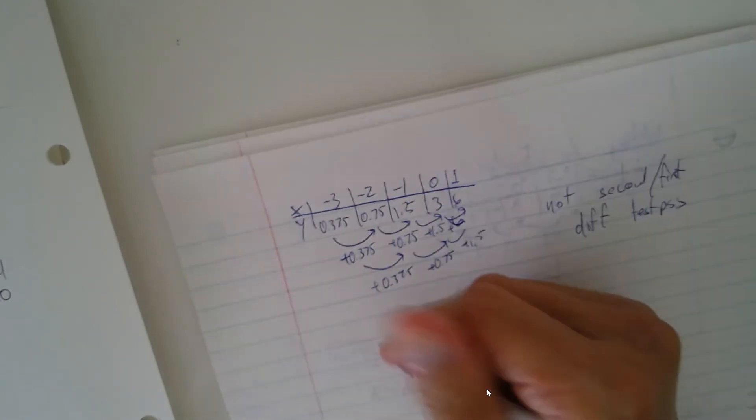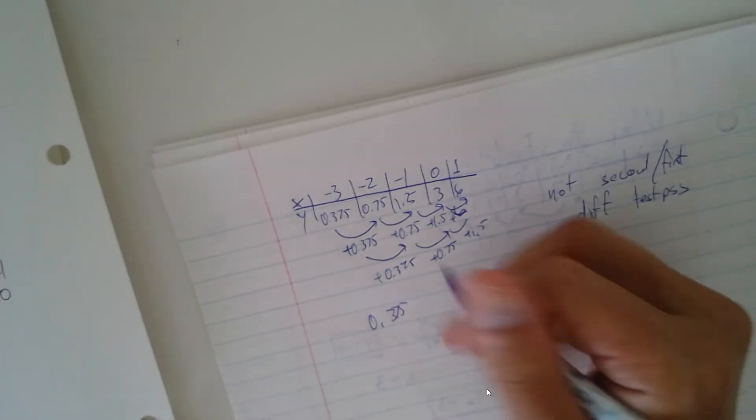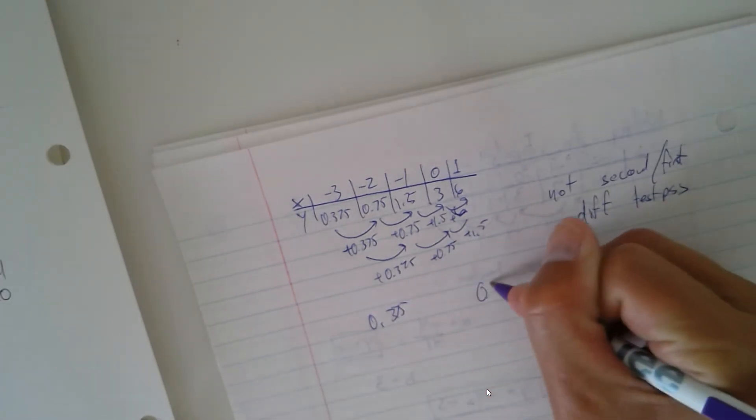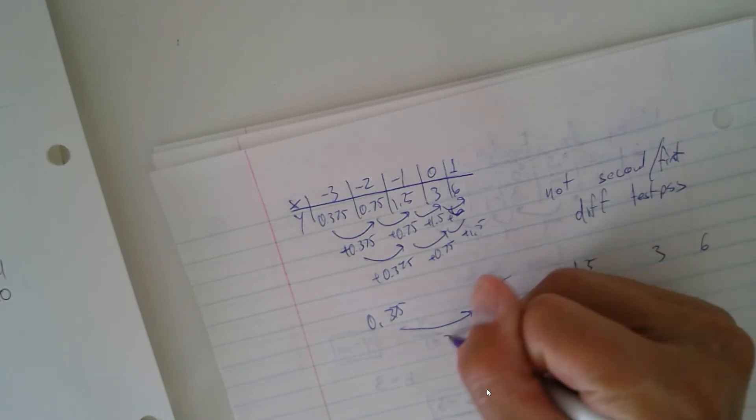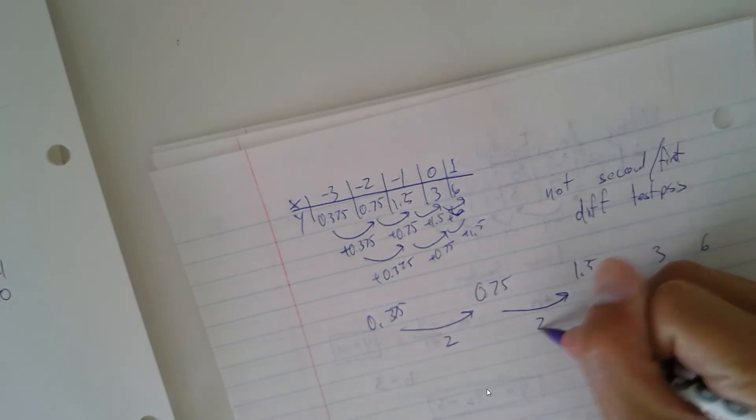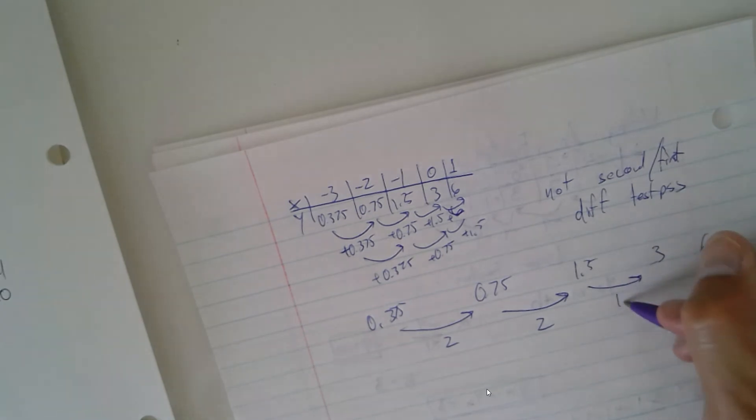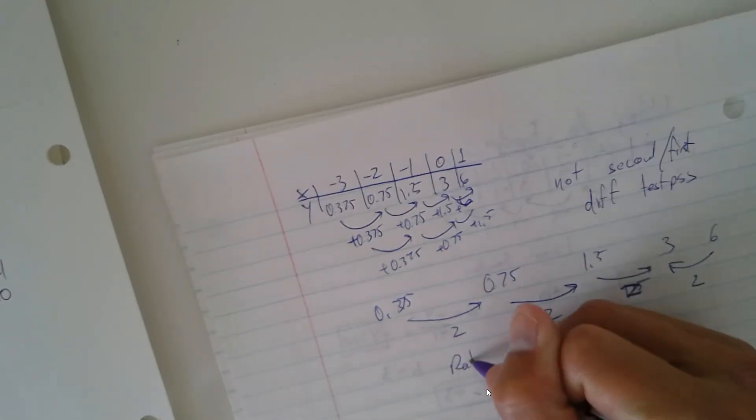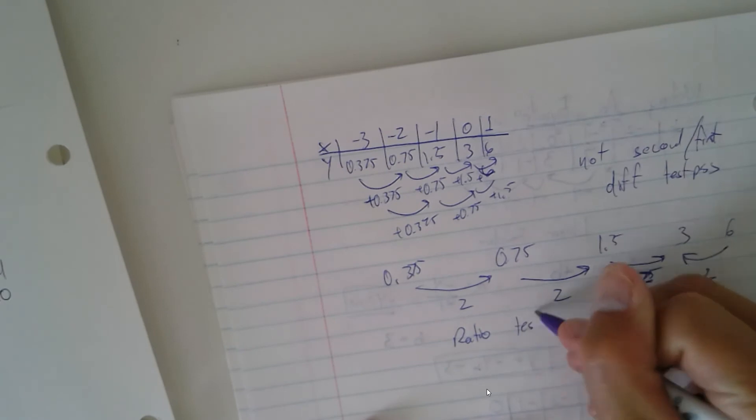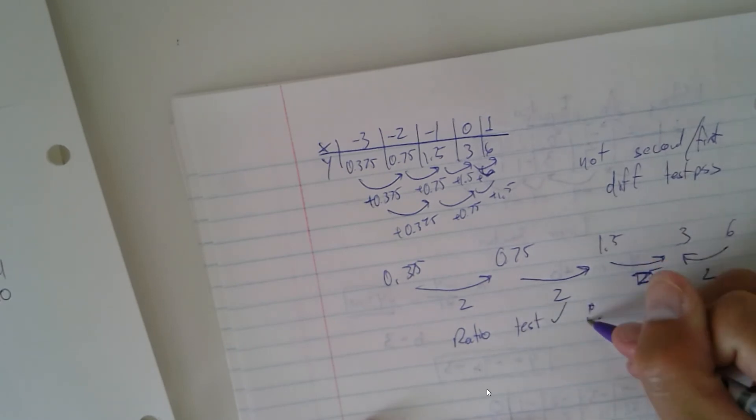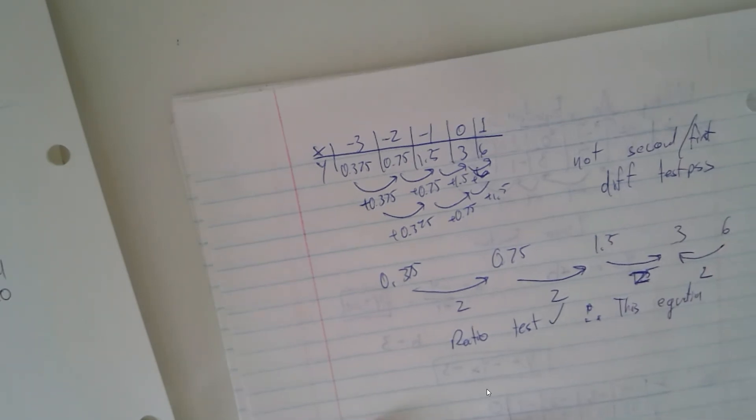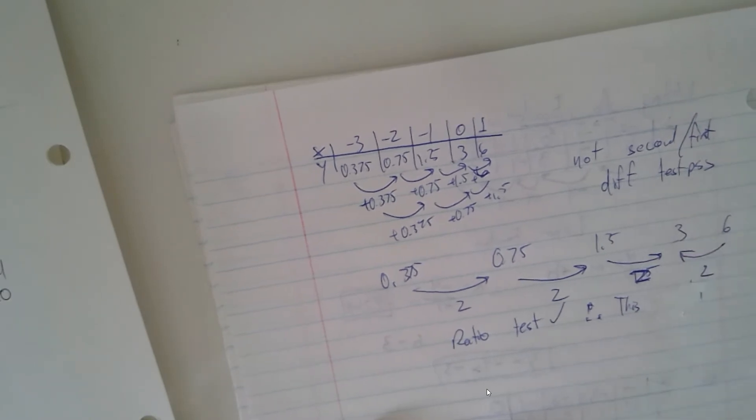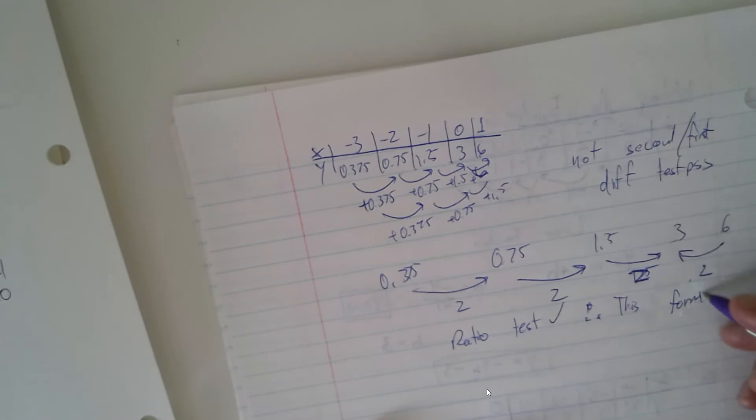So we're going to try one more thing, which is to see if there's ratios between 0.375, 0.75, 1.5, 3, and 6. Let's take the second number divided by the first, that gives me 2. Let's take 1.5 divided by 0.75, that gives me 2. Let's take 3 divided by 1.5, that's 2, and then 6 divided by 3 is 2. So it looks like the ratio test does pass, so therefore this is exponential.